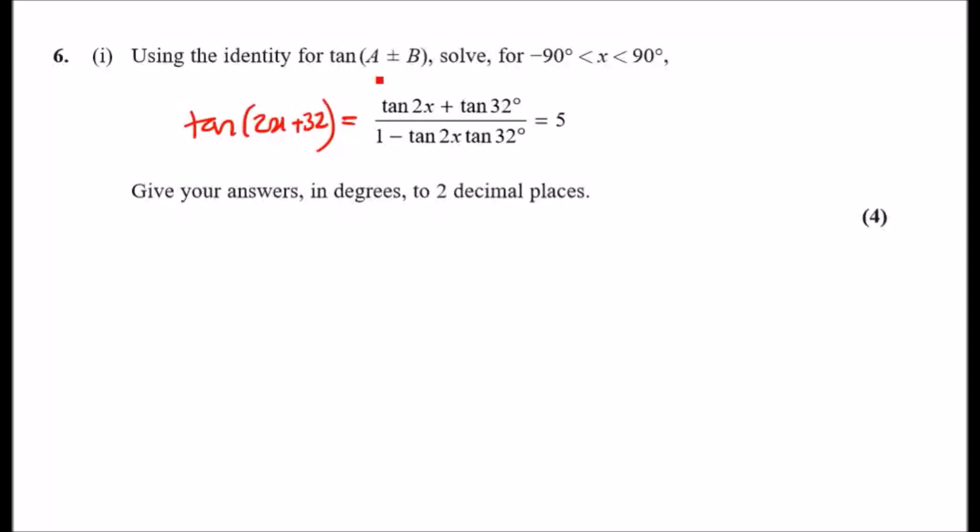That's probably why they gave it here—they want us to know that in its original tan form it's like that. From here, this means that the left-hand side equals 5, so we can say tan(2x + 32) must equal 5.